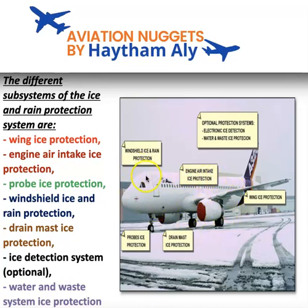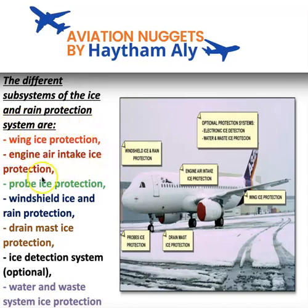We have two engine anti-ice valves — one for the left engine and one for the right engine. Each engine air intake cowl has its own engine anti-ice switch in the cockpit, giving us two engine anti-ice buttons on the anti-ice panel. In summary, both wing ice protection and engine air intake ice protection use hot bleed air.